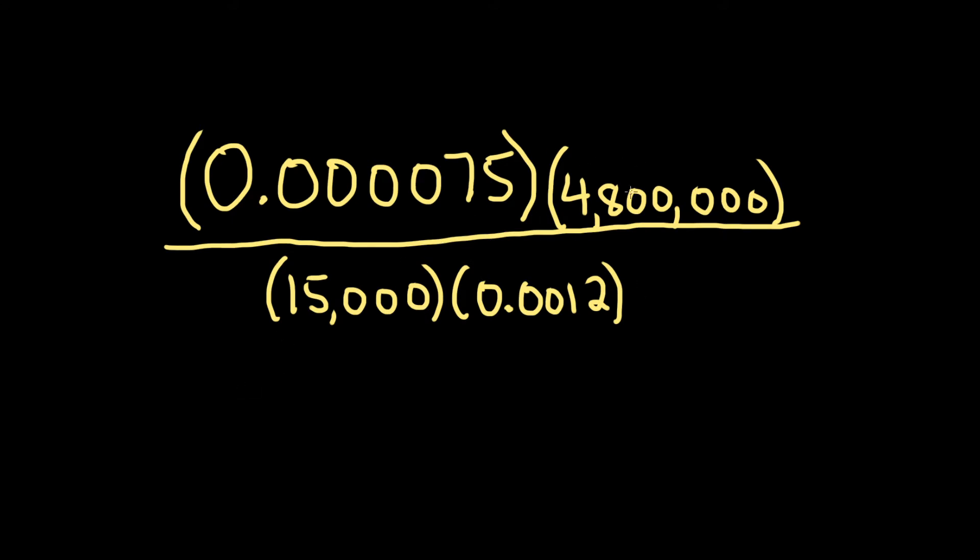Likewise, it would be nice if this was a 48 and this was a 12, because 48 over 12 is 4. So we're going to force things to work out that way. So I'm going to do it right here in the problem, all the work. So first let's focus on this piece here with the 75.